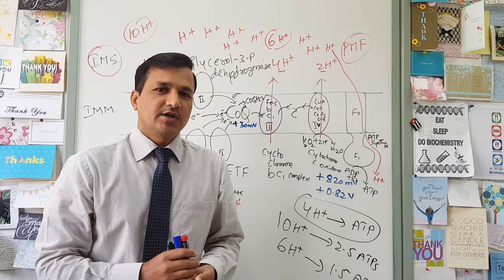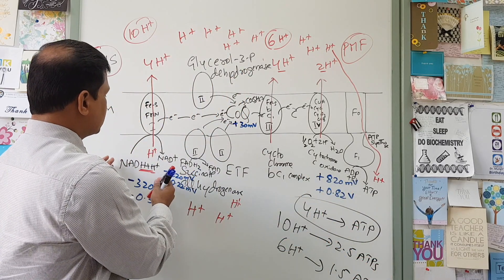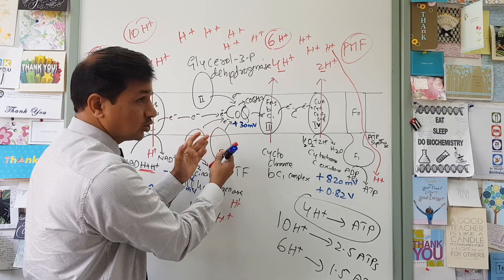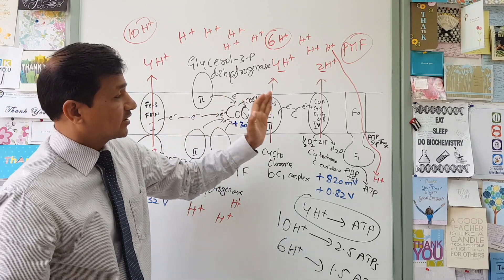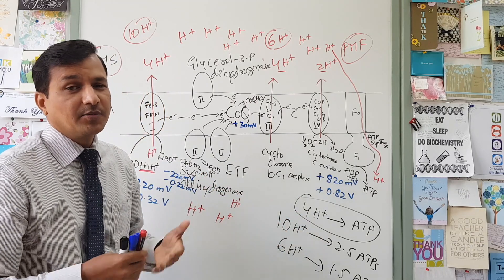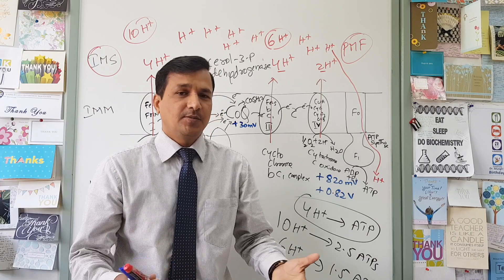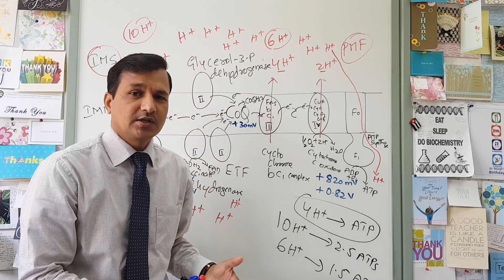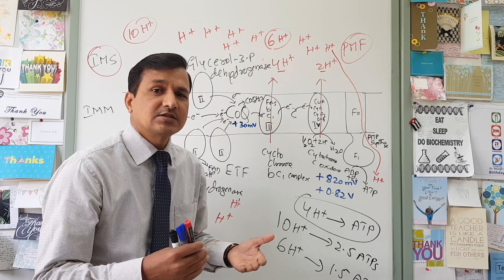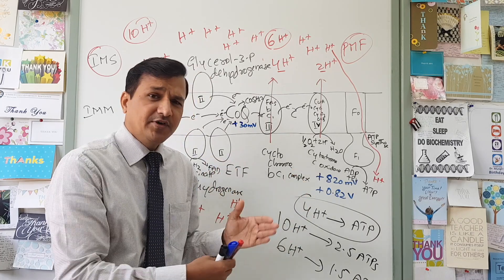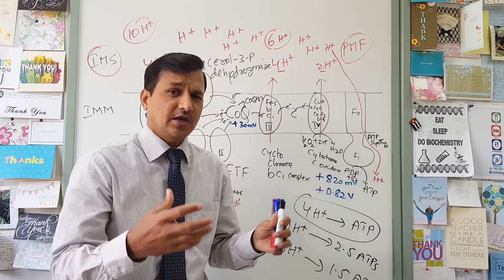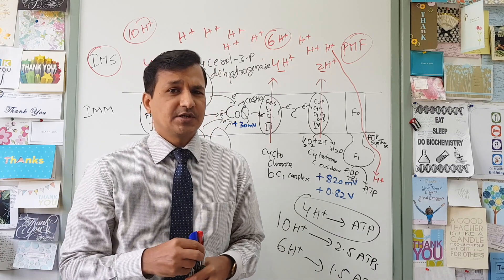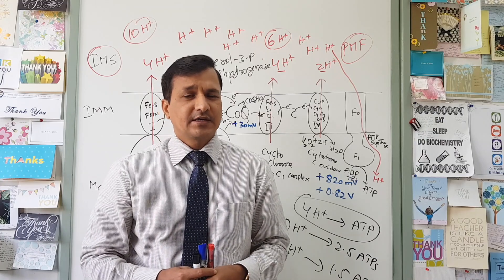This is what the electron transport chain is all about. I've explained why NADH plus H+ enters Complex 1 and why FADH2 enters Complex 2, how these molecules are oxidized, and how electron flow generates ATP. I hope this video has helped you understand the electron transport chain. If you have any questions, put them in the comment section below and I'll answer as quickly as possible. I've also made a video on brown adipose tissue, which you can watch at the end of this video. Thanks for watching, and I'll see you in my next video.